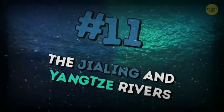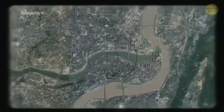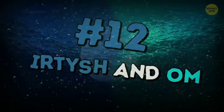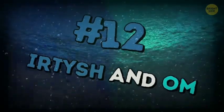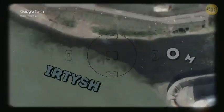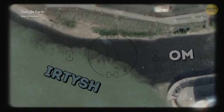The Jialing and Yangtze rivers meet in Chongqing, China. The Jialing is clean, and the Yangtze is brown. Irtush and Ulm. These two rivers flow into each other in Ulmsk, Russia. The Irtush is cloudy, and the Ulm, pure and transparent.